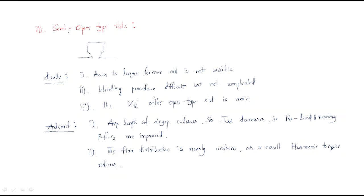In the last session we discussed about the open type slots. In this session we will discuss the next slot, which is the semi-open type slot. In the open type slot the construction is completely open, that's why it is called open type slot. The semi-open slot is not completely open but partially open, and compared with the open type it has less opening.